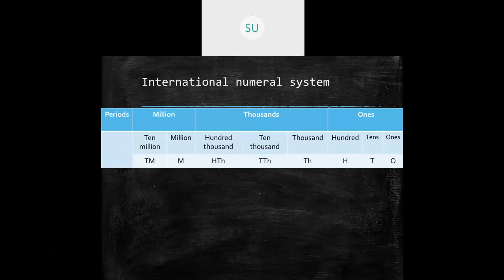Next, we looked at the international numeral system. The place values are similar up to the ten thousands place — ones, tens, hundreds, thousands, ten thousands — so the first five digits from the right are the same. After ten thousands, instead of one lakh, we have hundred thousands. Hundred thousands is equivalent to one lakh in the Indian numeral system.